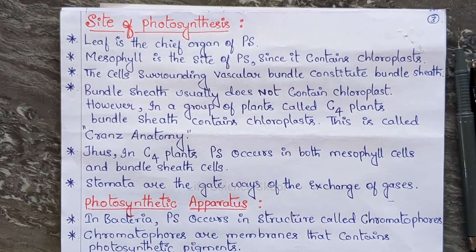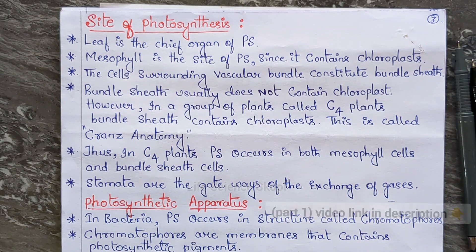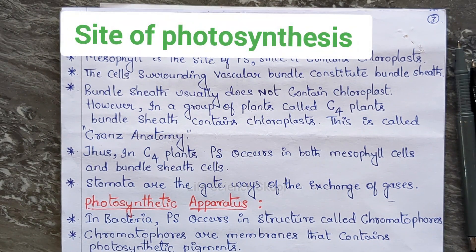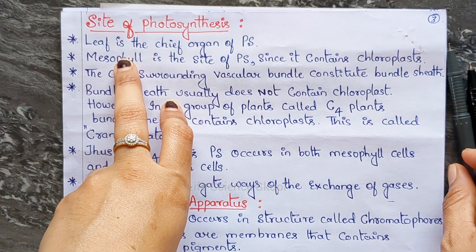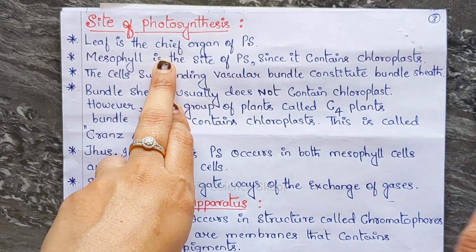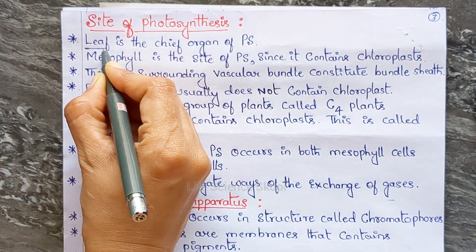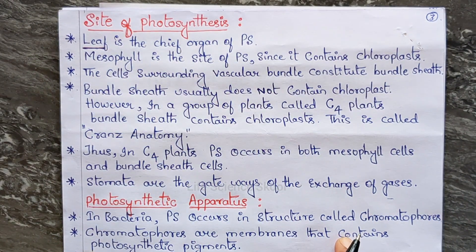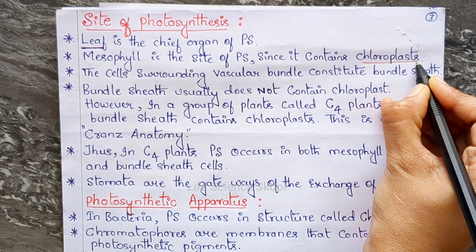Let's begin with the first one: site of photosynthesis. In the previous video we talked about what photosynthesis is and the phases — light reaction and dark reaction. Now we learn where photosynthesis takes place in plants. The leaf is the main chief organ of photosynthesis, and mesophyll is the site of photosynthesis since it contains chloroplasts.